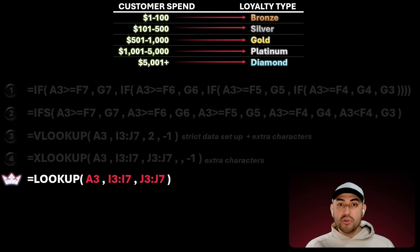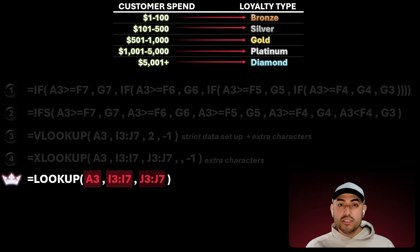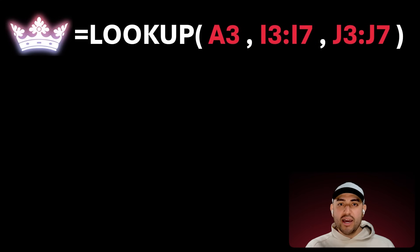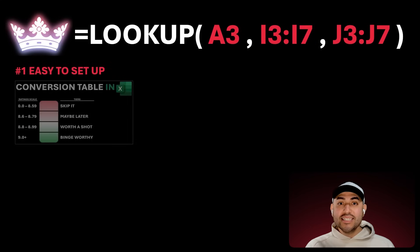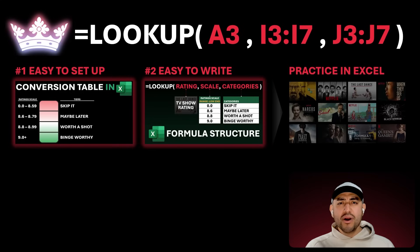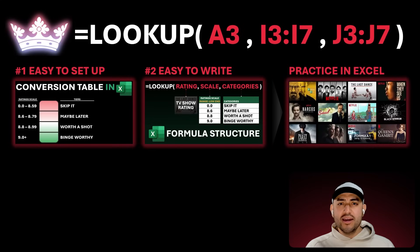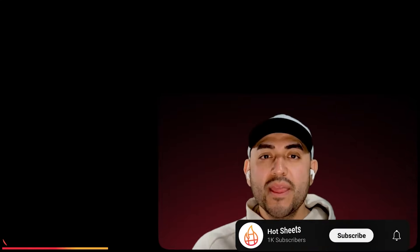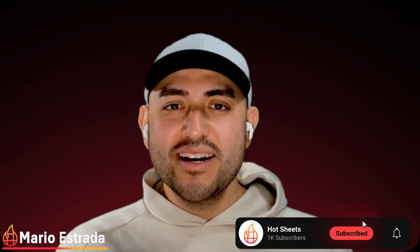Because look at how much simpler the lookup formula is — one, two, three parts. This simplicity is why I hail lookup as the king. It's easy to set up, it's easy to write. I'll show you both, and we'll practice on interesting data: Netflix TV show ratings. I'm Mario Estrada, and welcome to Hot Sheets. Don't tell your boss.